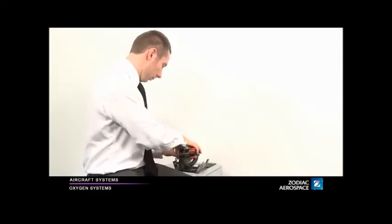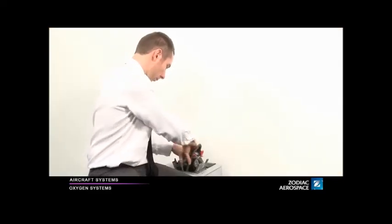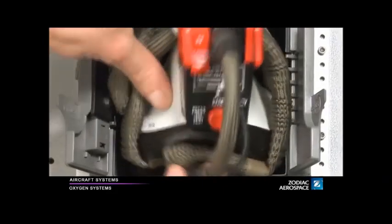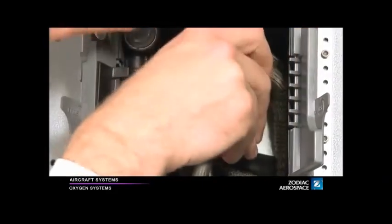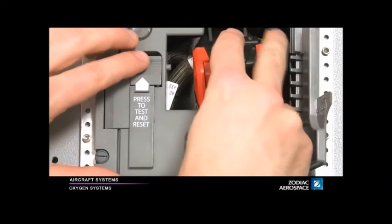Coil the oxygen supply hose into the bottom of the stowage box. Slide the mask into the box until it clicks locked. Close the door, making sure neither the hose nor the harness gets caught.